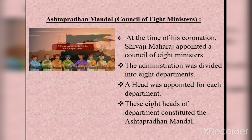Ashtapradhan Mandal — council of eight ministers. At the time of his coronation, Shivaji Maharaj appointed a council of eight ministers. The administration was divided into eight departments and a head was appointed for each department. These eight heads constituted the Ashtapradhan Mandal. The designations were: Pradhan, Amatya, Sachiva, Mantri, Senapati, Sumant, Nyadish, and Pandit Rao.